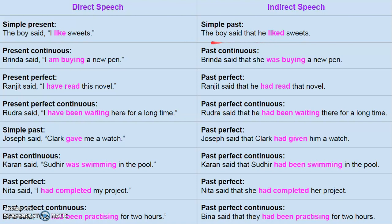Next, present continuous tense will be changed into past continuous tense. For example, 'Brinda said I am buying a new pen.' Here 'am buying' is in present continuous tense, so you have to change it into the past continuous form 'was buying.' The sentence becomes: 'Brinda said that she was buying a new pen.'